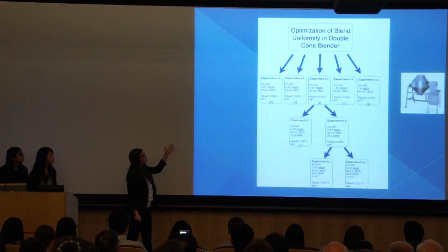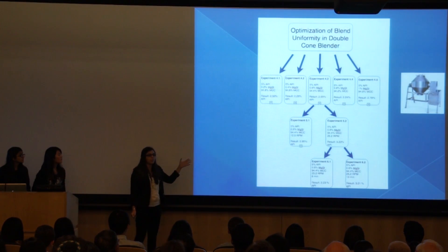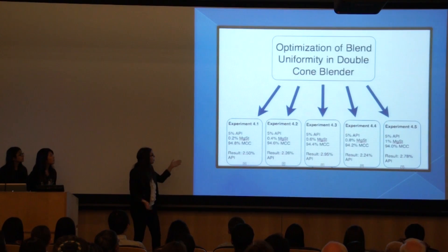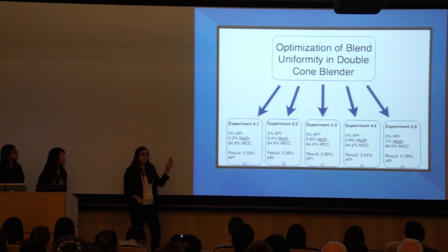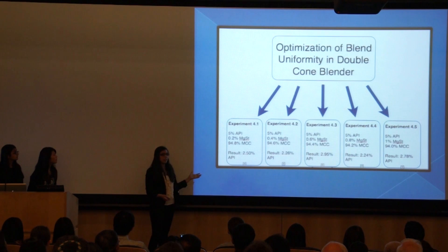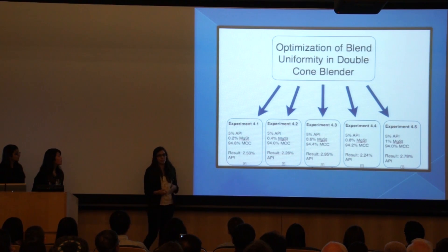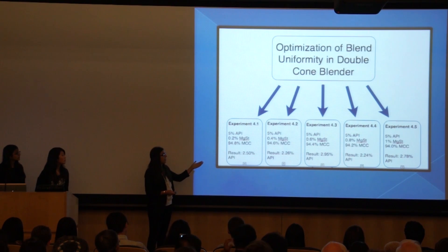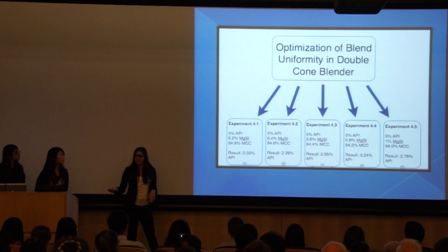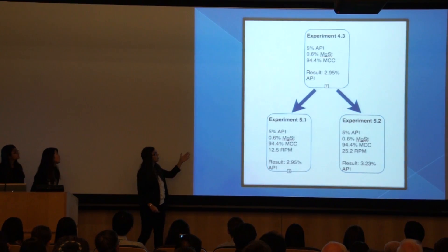Here is the data that we got for the double cone blender — we did the same thing for the V-blender. First, we varied the percent of magnesium stearate between 0.2% and 1%, and then tested using the NIR the percentage of API obtained after blending. We determined that 0.6% magnesium stearate resulted in the highest percentage of API, so we held that as a constant going forward.